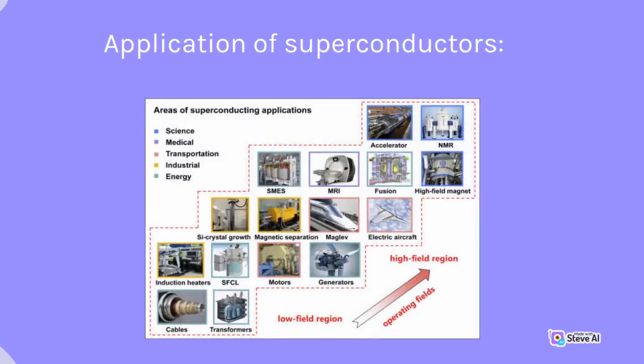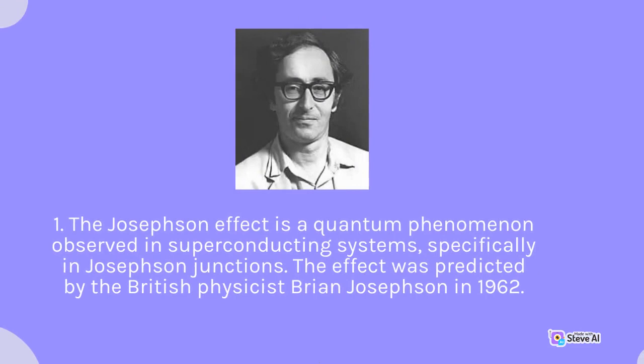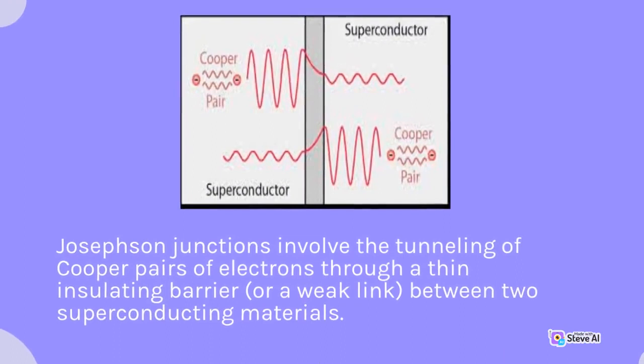Applications of superconductors: superconductors offer several advantages over conventional components, especially in specialized applications where their unique properties can be harnessed. The Josephson effect is a quantum phenomenon observed in superconducting systems, specifically in Josephson junctions. The effect was predicted by British physicist Brian Josephson in 1962. Josephson junctions involve the tunneling of Cooper pairs of electrons through a thin insulating barrier, or a weak link, between two superconducting materials.